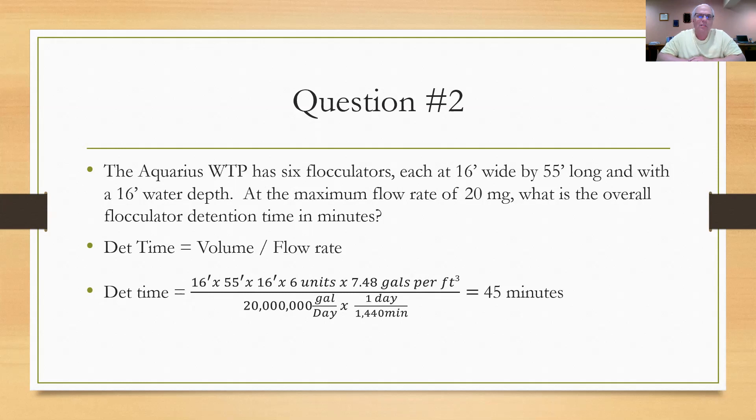So at Aquarius, when they're operating at something less than 20 mgd, which they typically are at 8 or 9 or 10 mgd, they've got to make a decision to turn on and turn off an even amount of flocculators that match the flow rate so that they're not in there for more than 45 minutes. In other words, if they kept all six flocculators on and were treating 8 mgd, they'd be in their flocculation period for more than an hour, and that's not good. If we stay in flocculation too long, we're going to beat up the floc particles, damage them, and they won't settle well. We've got to be careful about that.